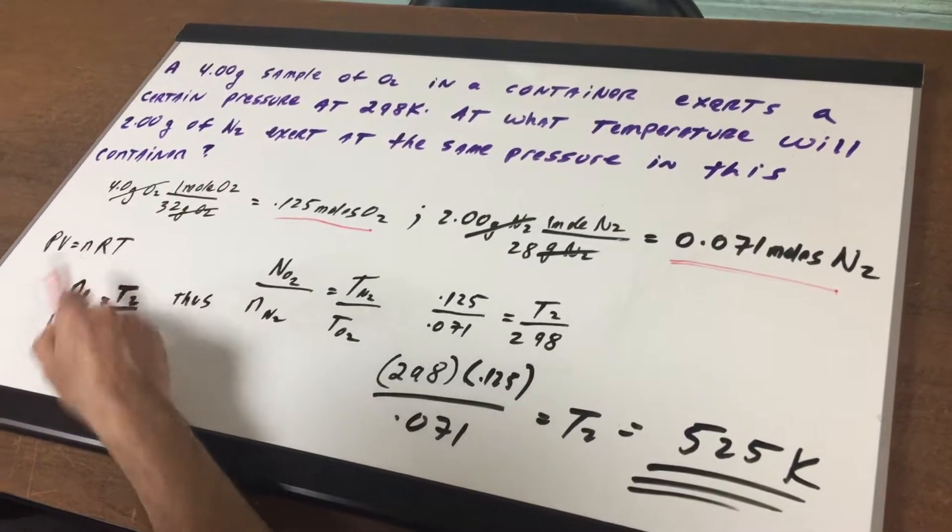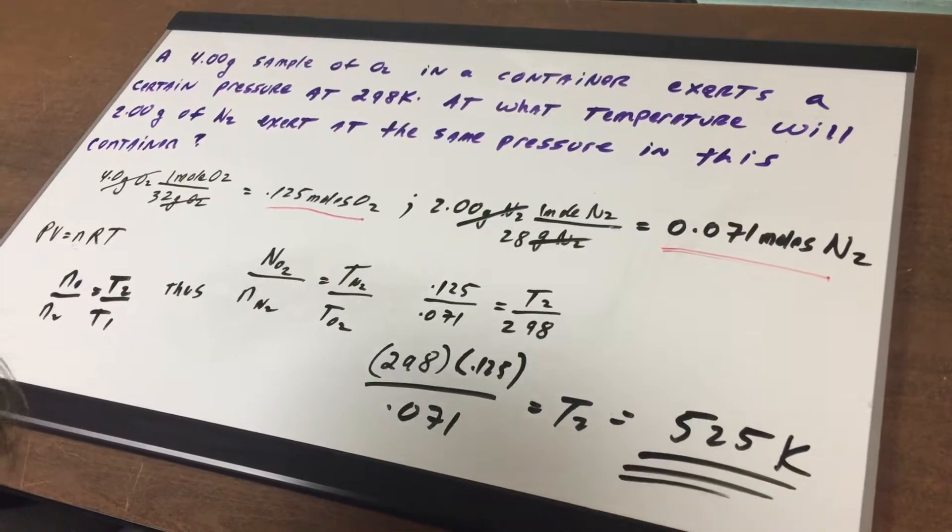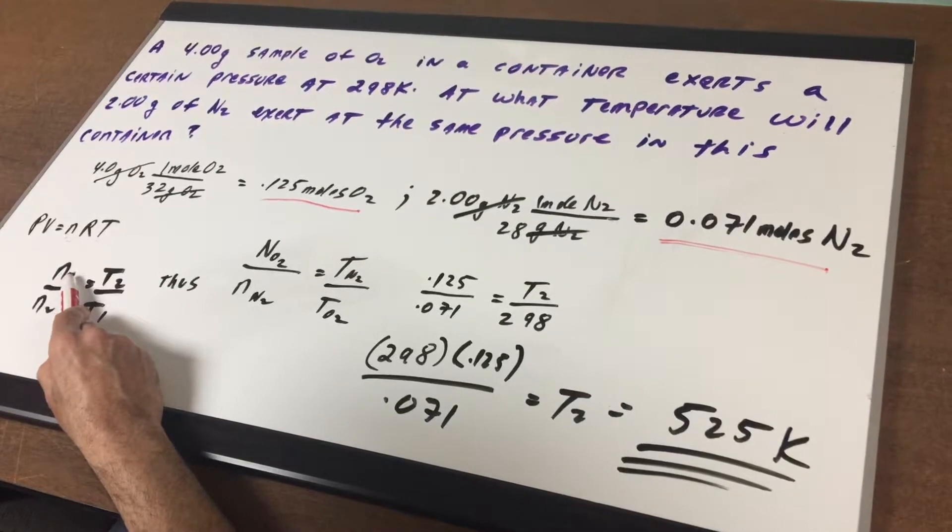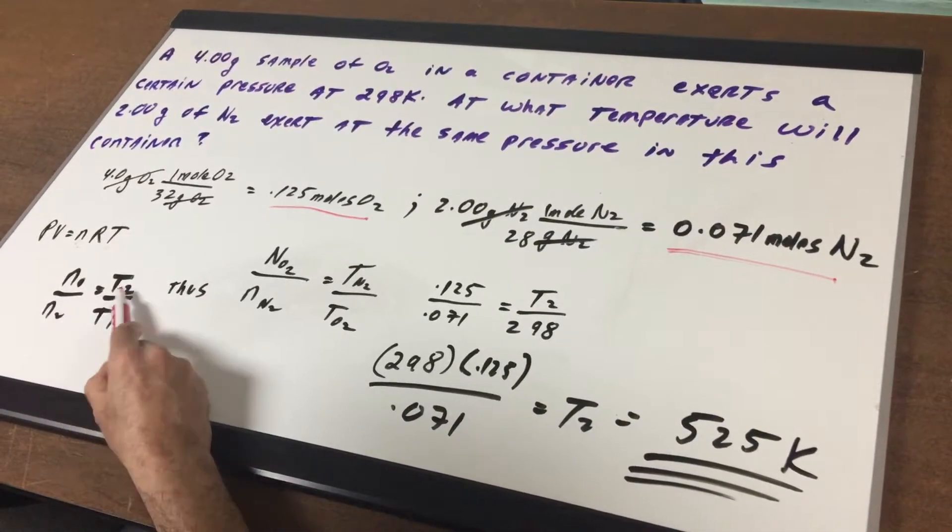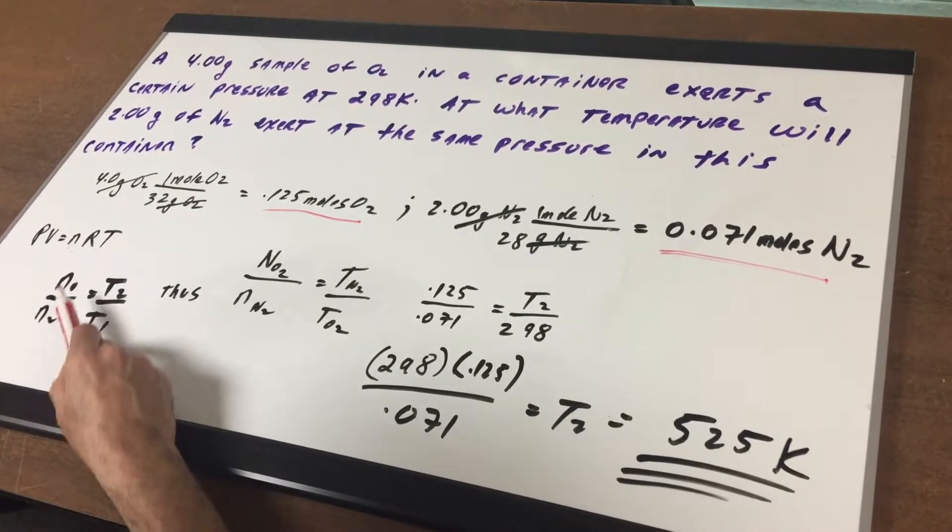Any time you have two variables on the same side of an equation, it means it's an indirect relationship. So I can say n1 over n2 is T2 over T1 because it's indirect.